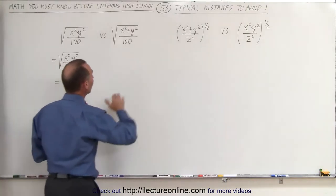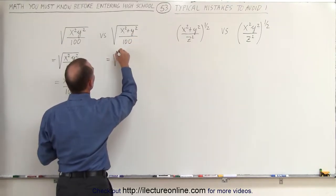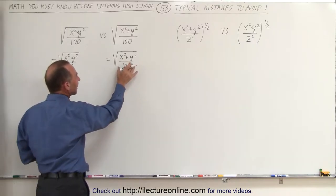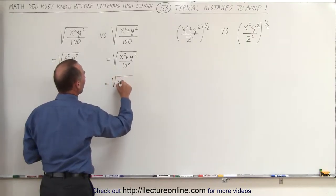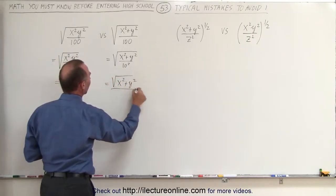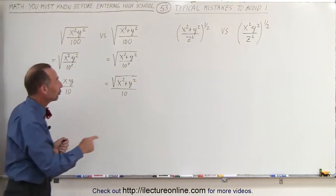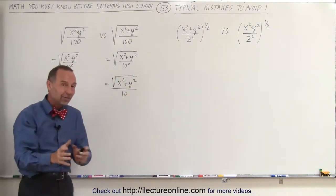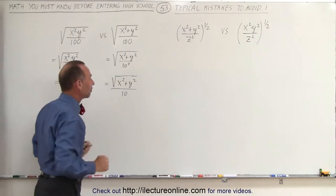On the other hand, when you have something like x squared plus y squared divided by 100, this can indeed be written as the square root of x squared plus y squared divided by 10 squared. We can take the 10 squared out because it's the denominator, giving us the square root of x squared plus y squared divided by 10. But the numerator cannot be taken outside the radical. Even though there's an x squared and a y squared and we're taking the square root, there's a plus sign here, and because of that plus sign, you cannot take out an x or a y.